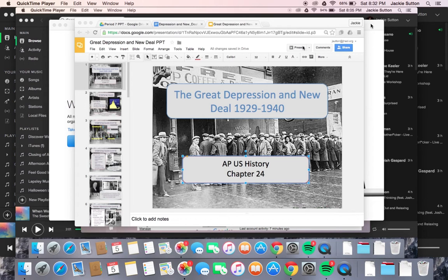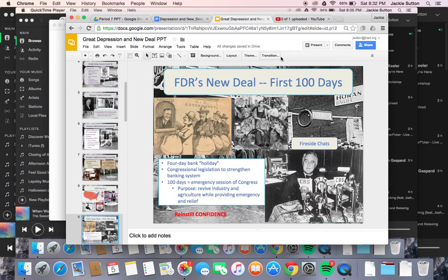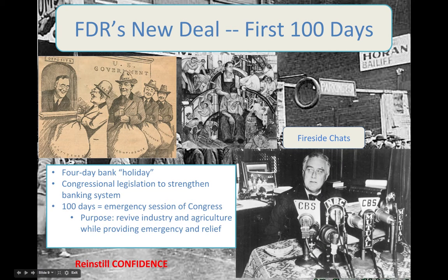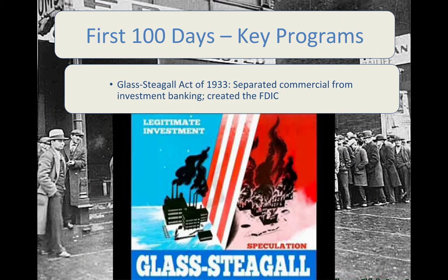Let's keep going with the First 100 Days of FDR's presidency. As a recap from the first video, the First 100 Days literally marks the first 100 days that FDR was in office. He was very active — a major breakaway from Hoover's administration, where Hoover was blamed for not doing much at all. FDR calls an emergency session of Congress and drafts a number of programs to help stimulate the economy. I just want to mention some of the key ones that will probably show up on the AP exam.